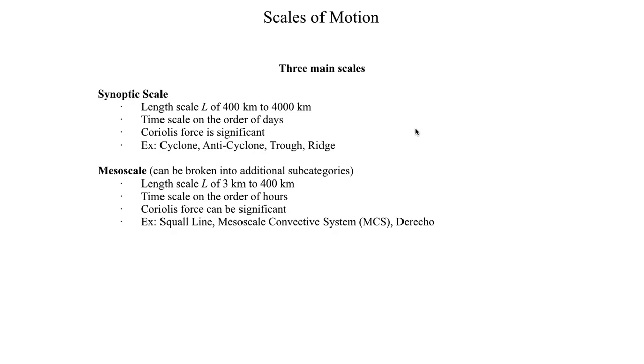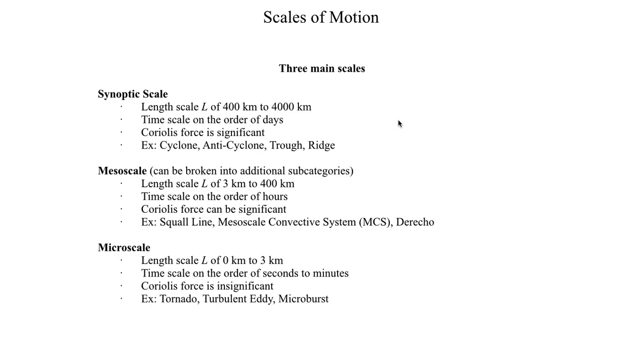The microscale—typically something less than three kilometers in diameter. Microscale phenomena typically last seconds to minutes. If you get to really, really small scale, that time scale can even go into fractions of a second, like milliseconds or microseconds. Really fine-scale turbulent eddies usually don't last longer than a few microseconds or milliseconds. On microscale, we can safely say that Coriolis force is insignificant, as we showed with tornadoes. Other microscale phenomena include microbursts and turbulence eddies.